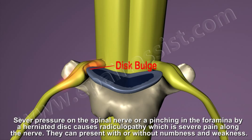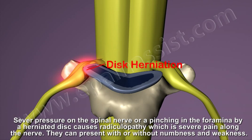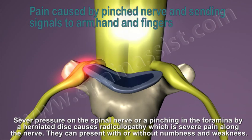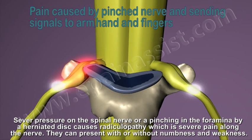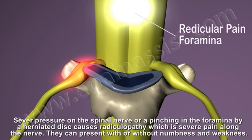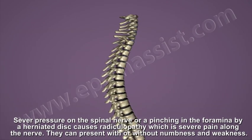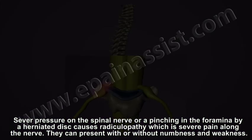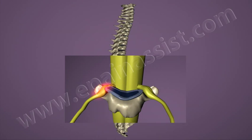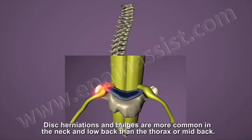Severe pressure on the spinal nerve or a pinching in the foramina by a herniated disc causes radiculopathy, which is severe pain along the nerve that can present with or without numbness and weakness. Disc herniations and bulges are more common in the neck and low back than in the thorax or mid-back.